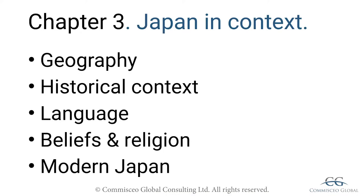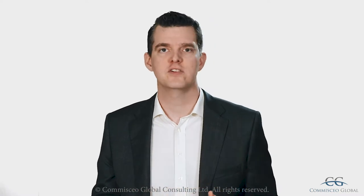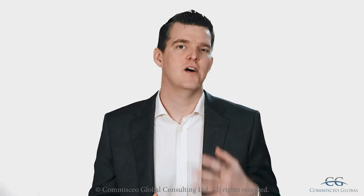In this chapter, we're going to be learning a bit about Japan to give us some context that will really help us explain upcoming topics. As with any country or culture, Japan has been shaped by its past as well as its physical environment. Understanding this helps us understand the Japanese today. In this chapter, we're going to be giving you a crash course on Japanese geography, history, language, and beliefs. Lastly, we'll be taking a peek at what defines modern Japan.